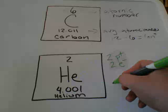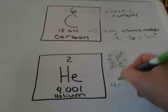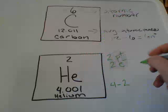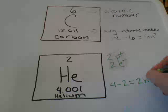To find the number of neutrons, we take the atomic mass, which is 4, minus the atomic number, which is 2. And that gives us 2 neutrons.